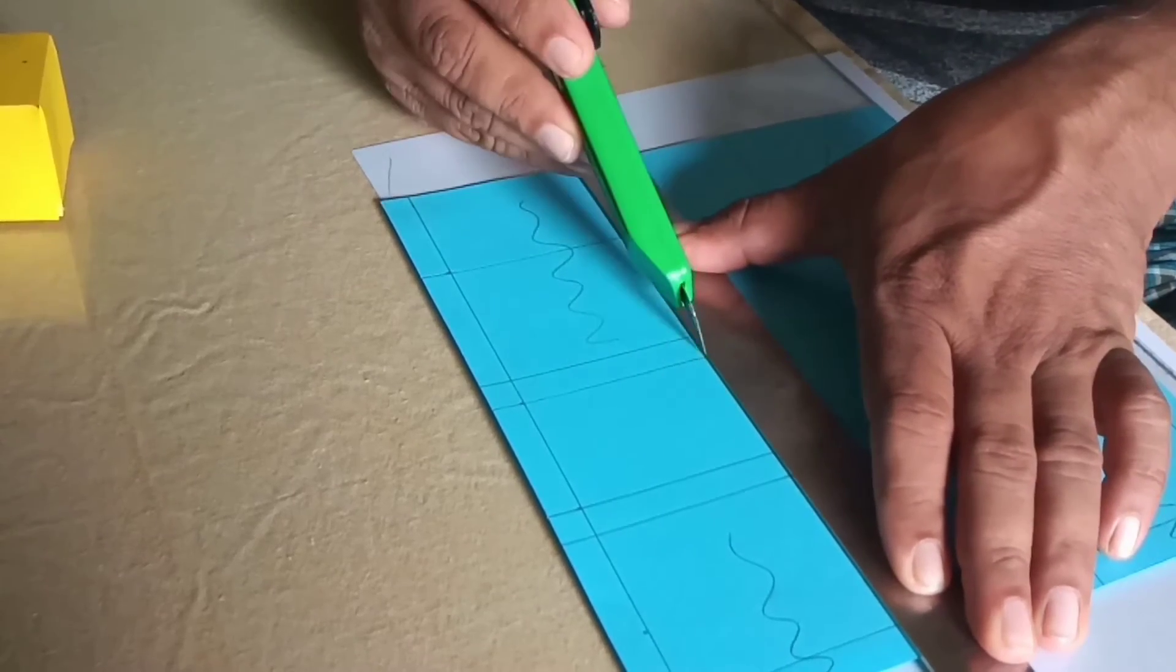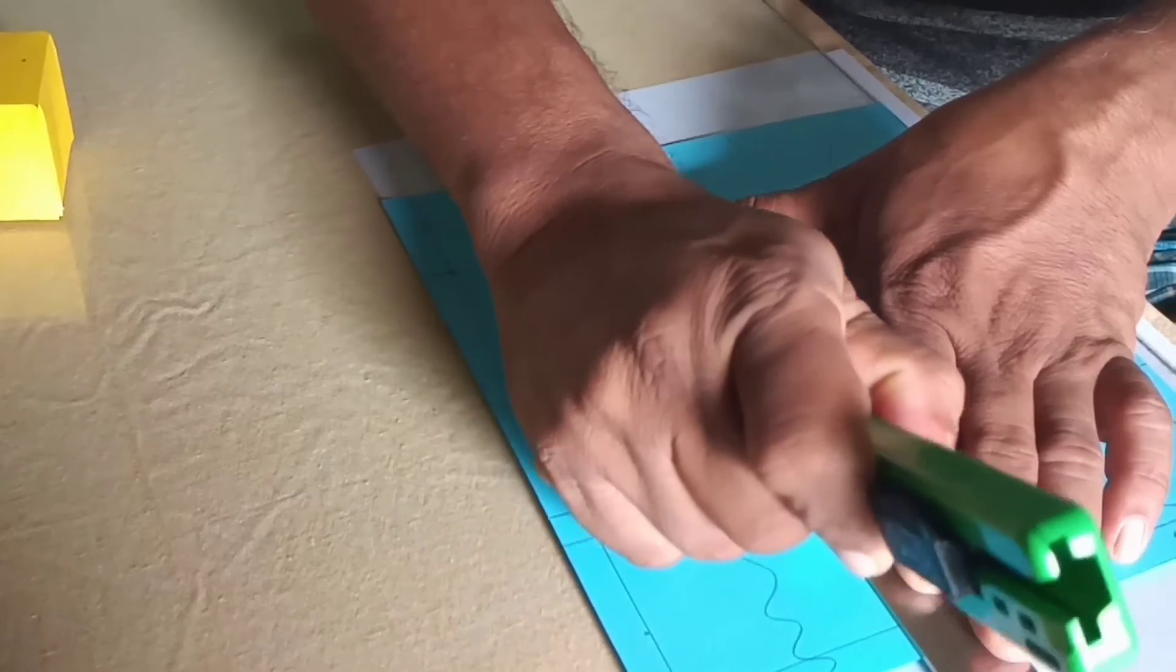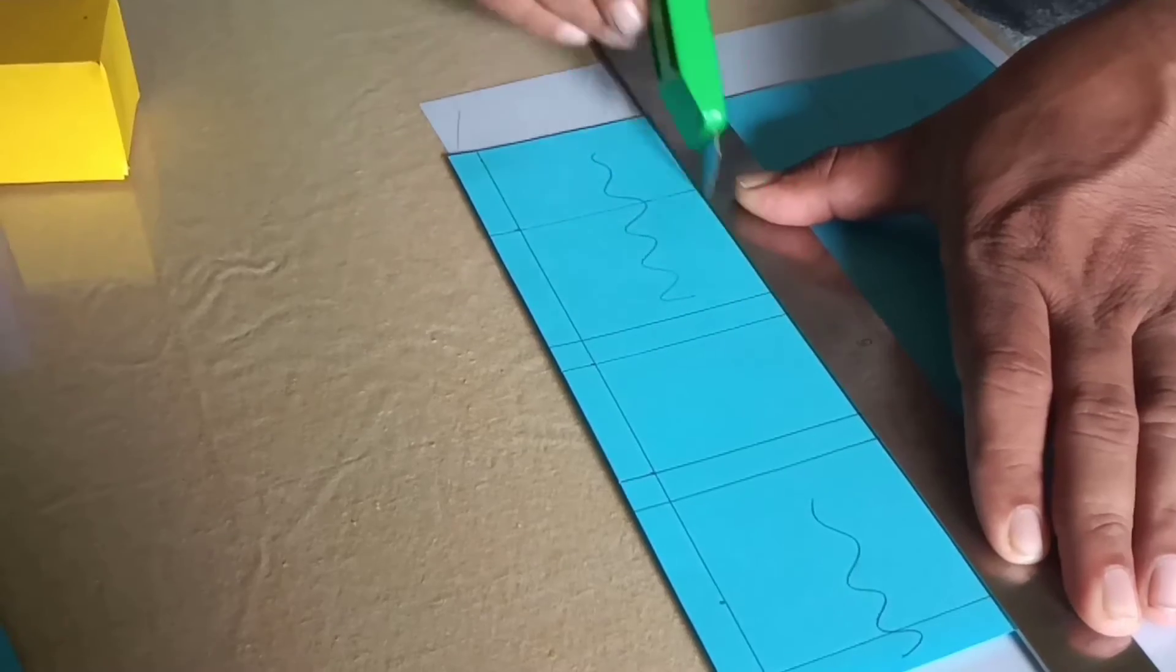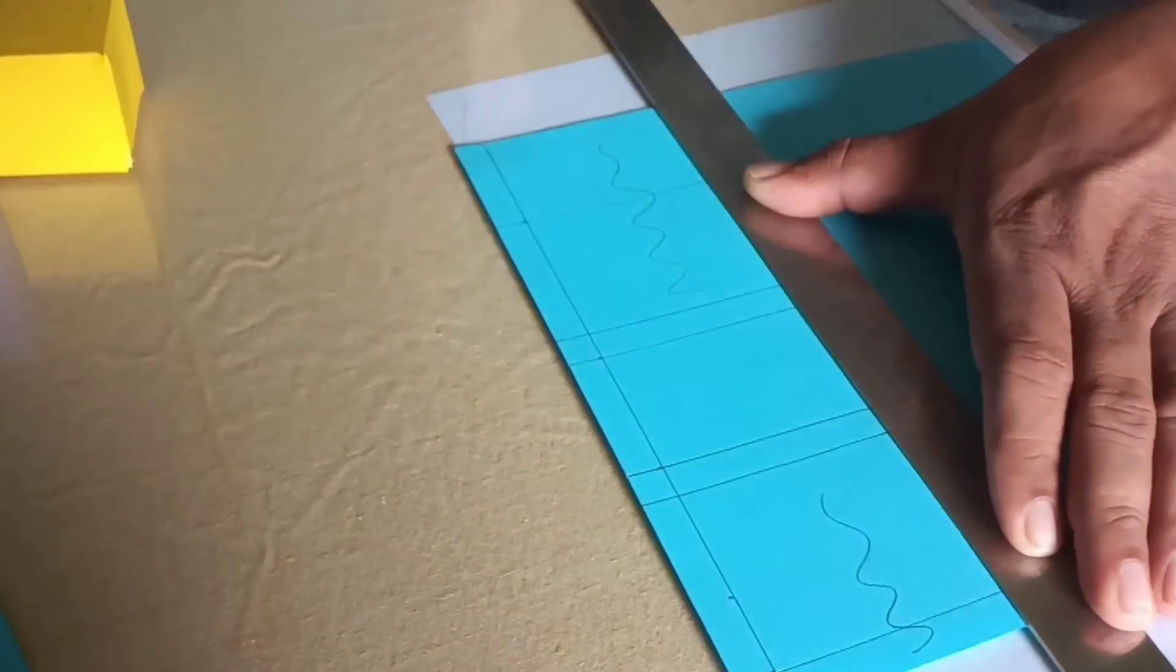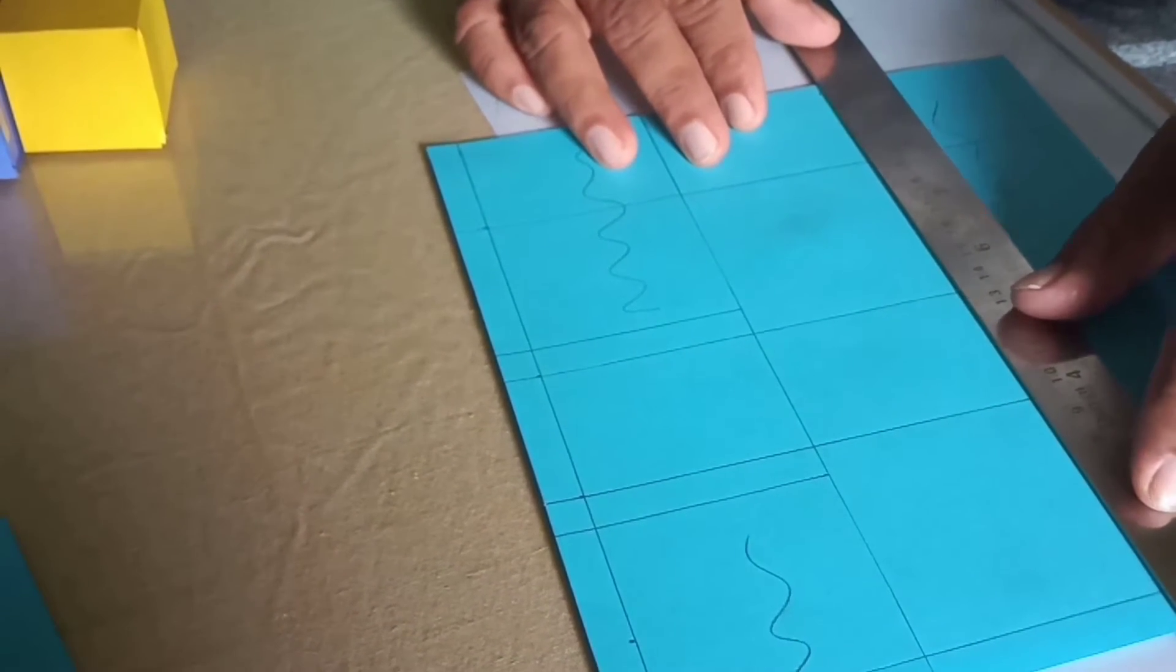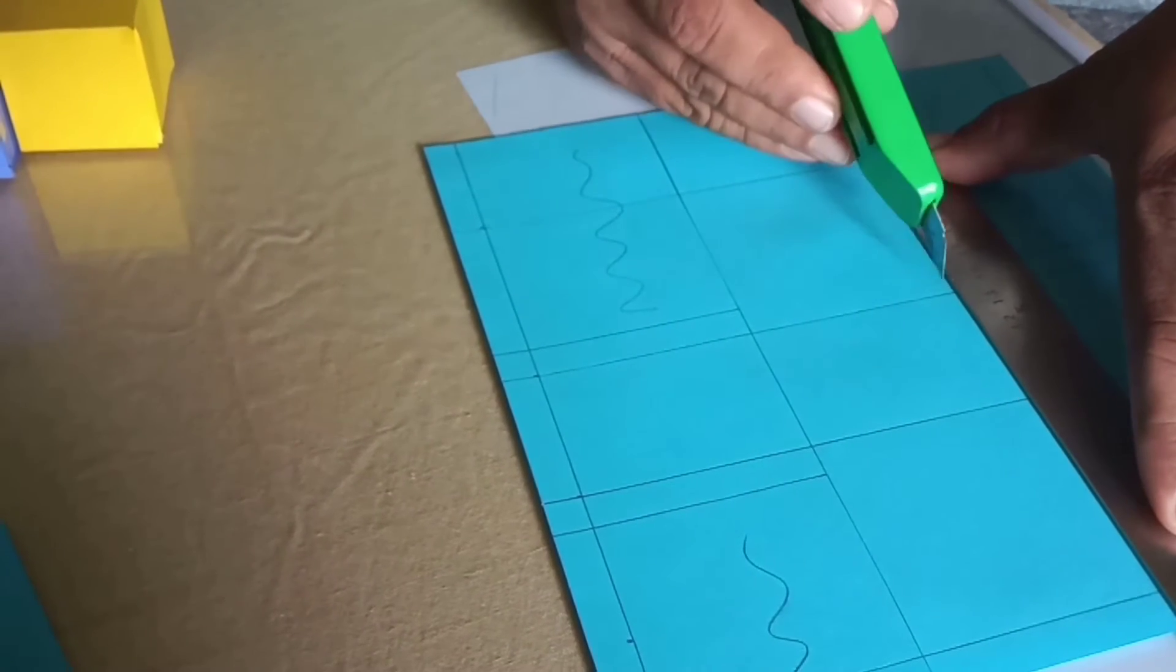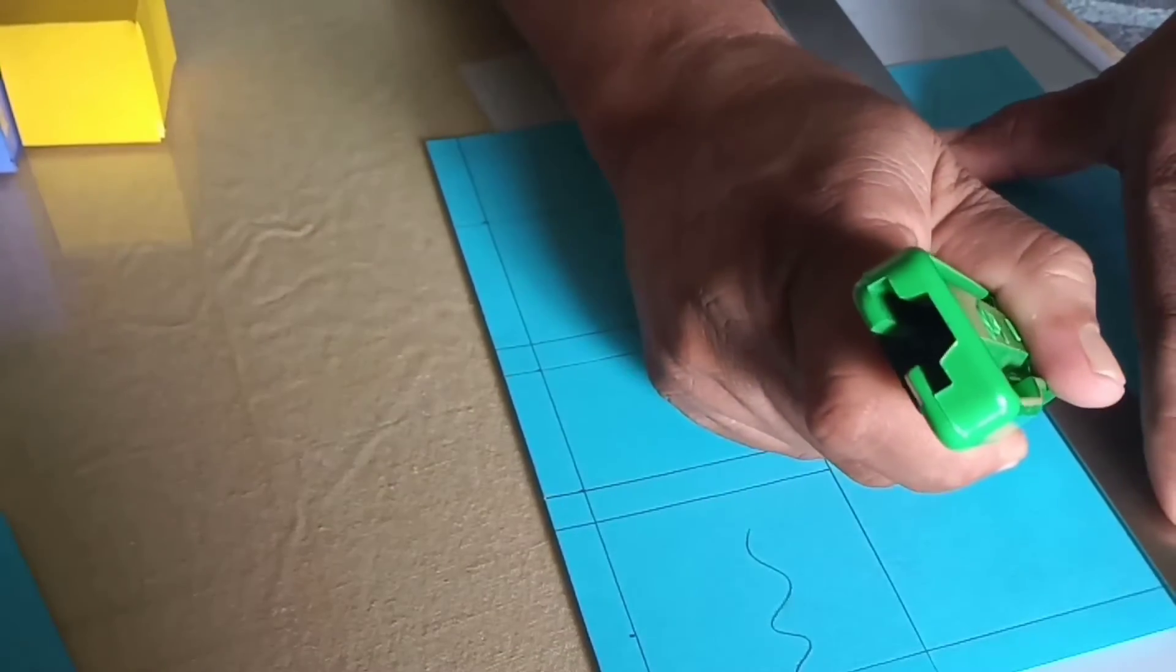I use a cutter and the steel ruler because the cuts are perfect when we use a cutter rather than a scissor. Look at that beautiful cut. Now on this side, cut from here and cut from here.